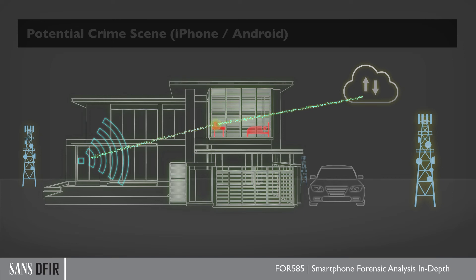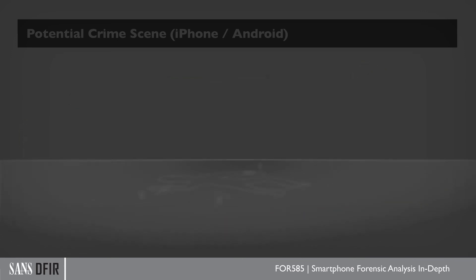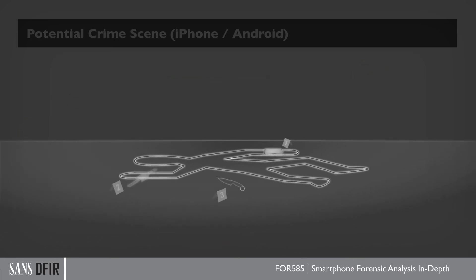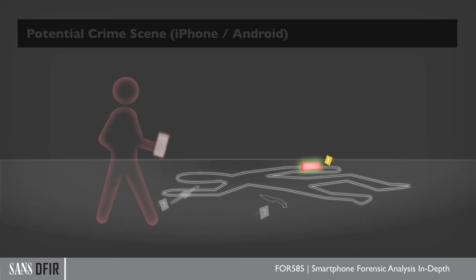Even if we take this person of interest out of the equation and we go back to the crime scene, the phone that is with the body — with the victim — may have information about the perpetrator or the suspect in the crime, because these phones are constantly pinging out and pulling data in.